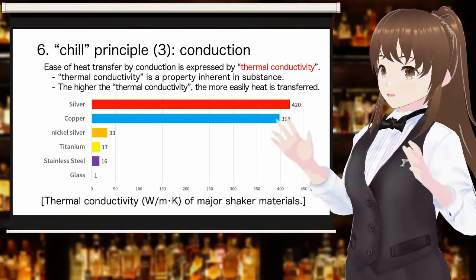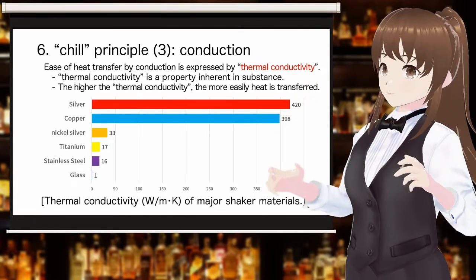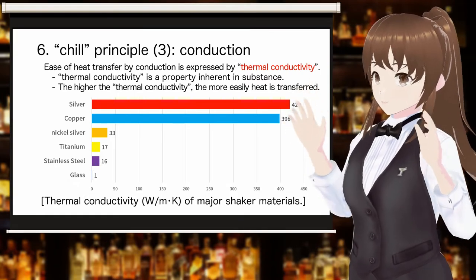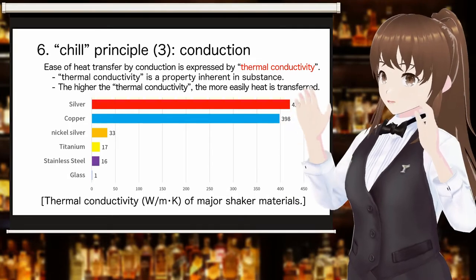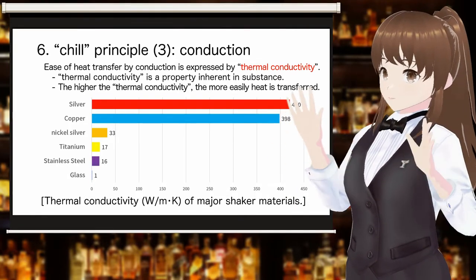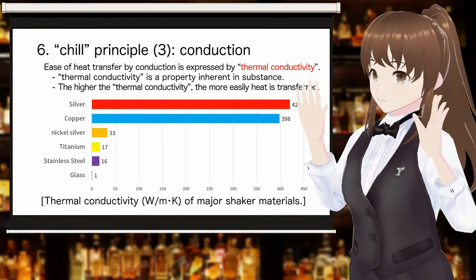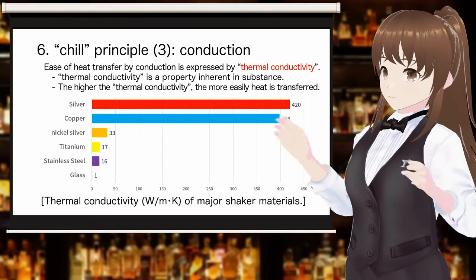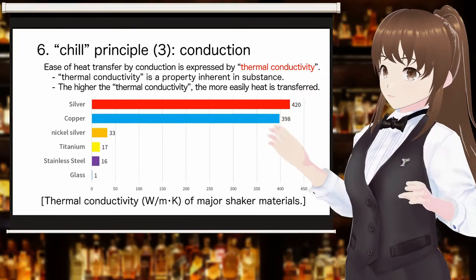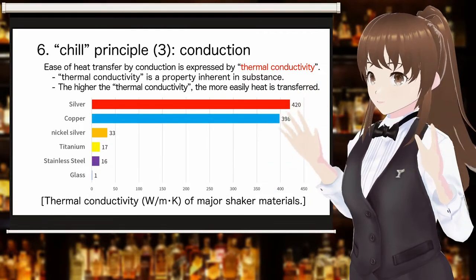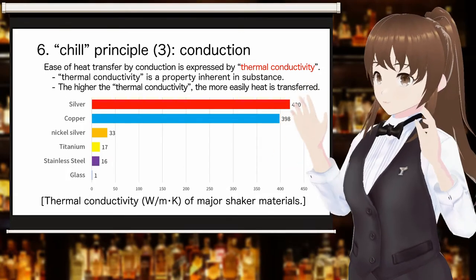The ease of heat transfer in a solid is expressed by thermal conductivity. Thermal conductivity is an intrinsic property of a material. In other words, thermal conductivity in shaking is determined solely by the material of the shaker and does not vary with shaking technique or method. The greater the value of thermal conductivity, the more easily heat is transferred. The slide shows a bar graph of the thermal conductivity of the main materials used in shakers, confirming that thermal conductivity varies greatly depending on the material.